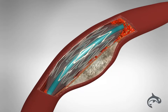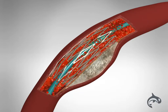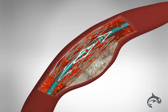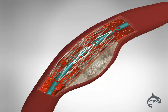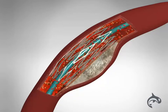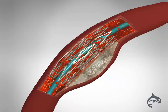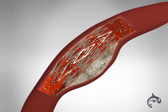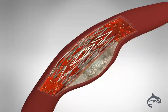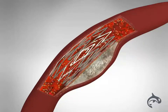Then the balloon is deflated, but notice the stent remains expanded — it's still holding the artery open. The catheter and balloon are pulled out of the artery and out of the body, but the stent remains in place inside the artery, keeping it open.